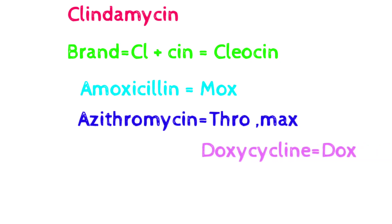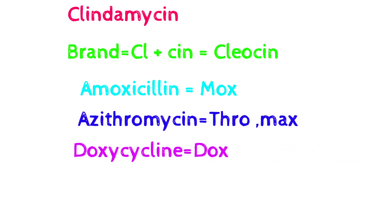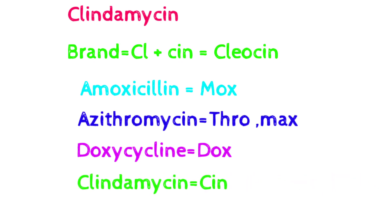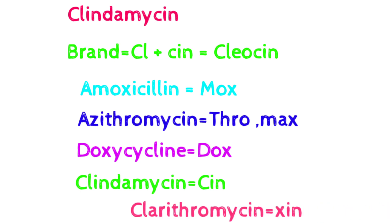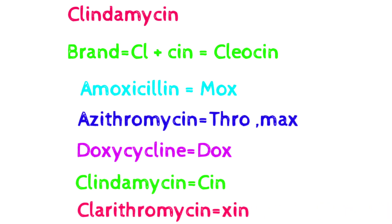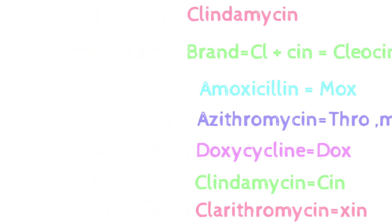Here is how to remember these brand names easily: for the amoxicillin group, always look for 'mox'; for azithromycin drugs, look for 'thro' or 'max'; for doxycycline drugs, always look for 'dox'; and for both clindamycin and clarithromycin drugs, always look for 'cin' or 'zine'.